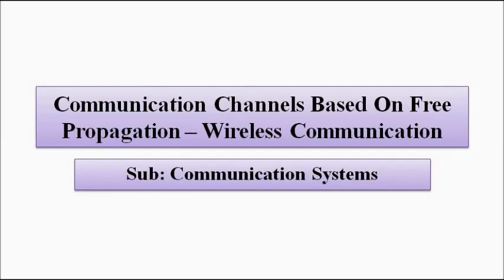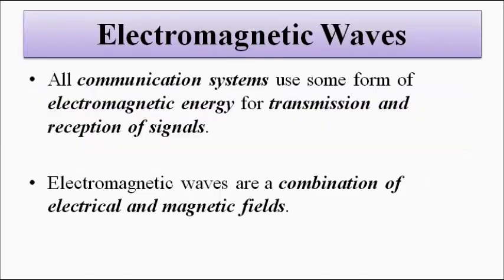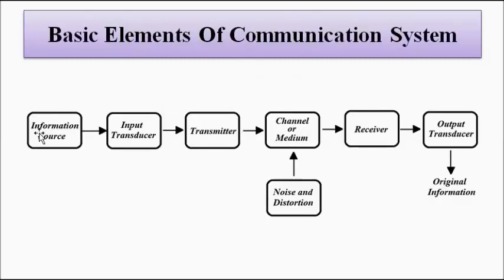Free space propagation is basically called the wireless communication method. Before we discuss wireless communication, we should discuss a little about electromagnetic waves, because in the whole communication process it involves converting information from non-electrical form into electrical form with the help of an input transducer, and then the transmitter's modulator, amplifier, and antenna convert it into electromagnetic waves.